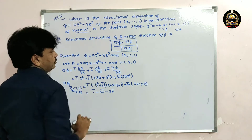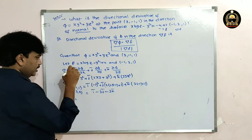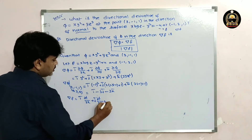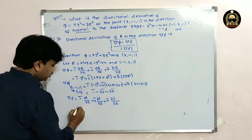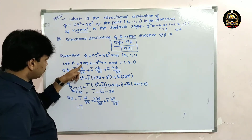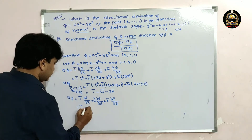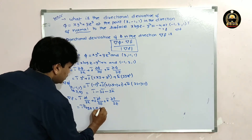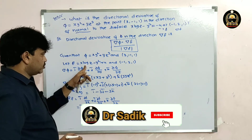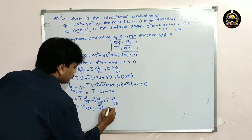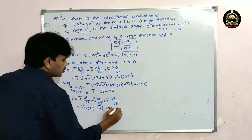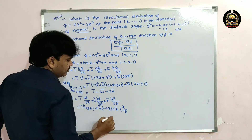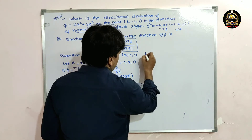Now finding del f. Del f = i·(∂f/∂x) + j·(∂f/∂y) + k·(∂f/∂z). The derivative of f with respect to x gives log z; with respect to y gives −2y; with respect to z gives x/z. So del f = i·log(z) + j·(−2y) + k·(x/z).